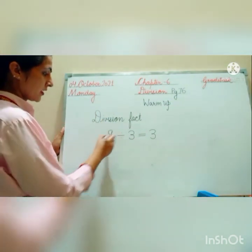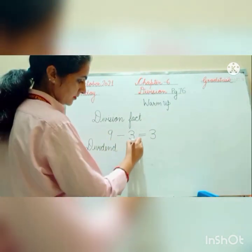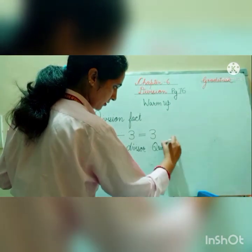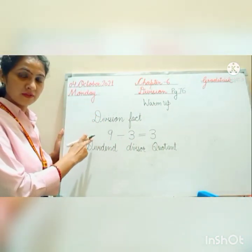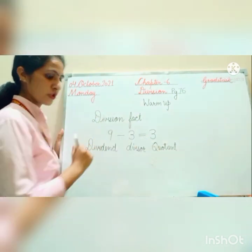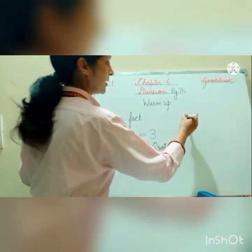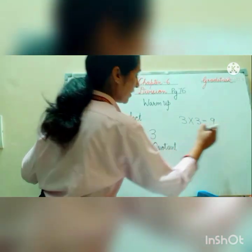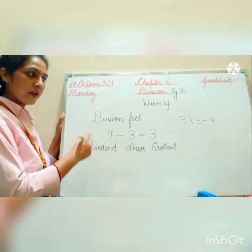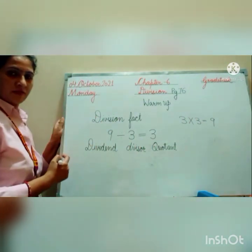So how we are writing in division form: this is the dividend, this is the divisor, and this is the quotient. The number which we are dividing is the dividend. The number by which we are dividing is the divisor. After dividing, what we are getting — that is the quotient. We can write division facts from the multiplication fact. The multiplication fact here is 3 multiplied by 3 equals 9. With this multiplication fact, you can make division facts. Vice versa, we can make it.